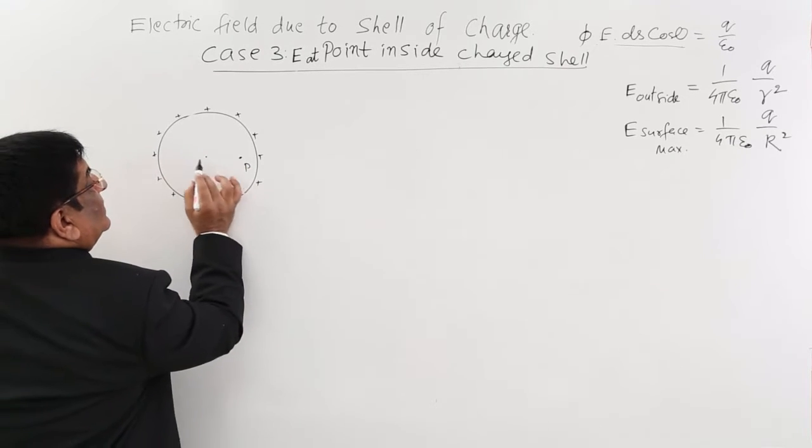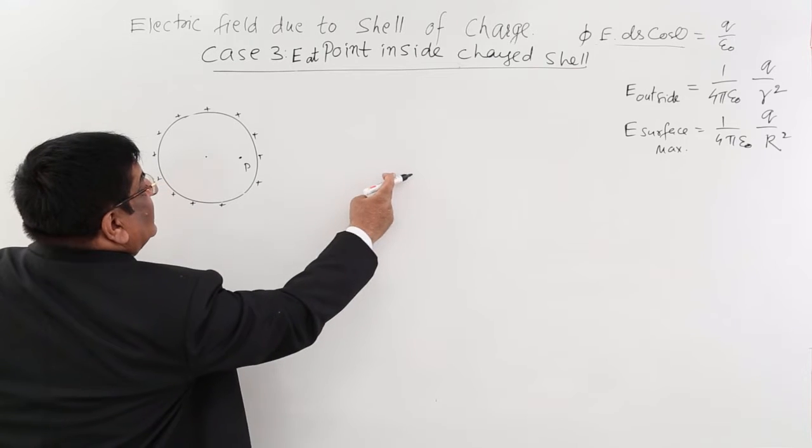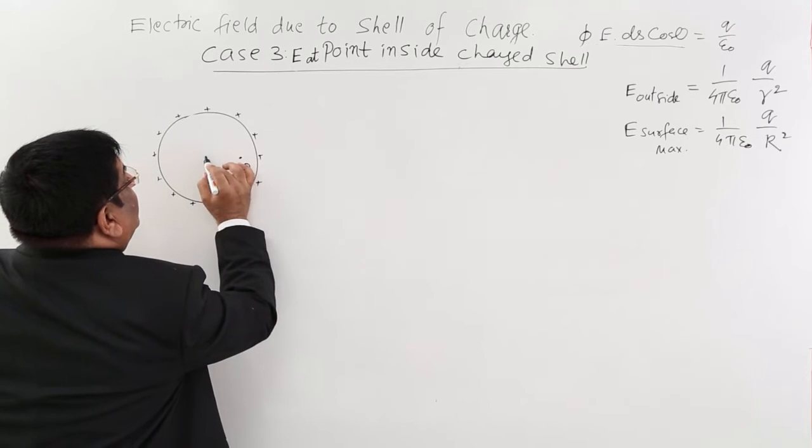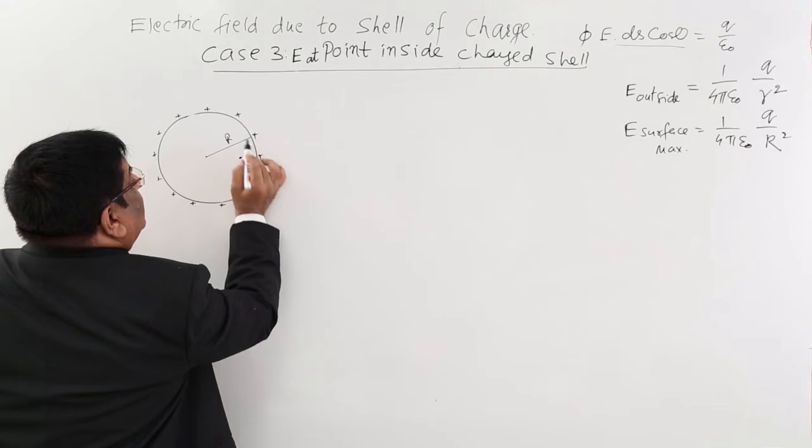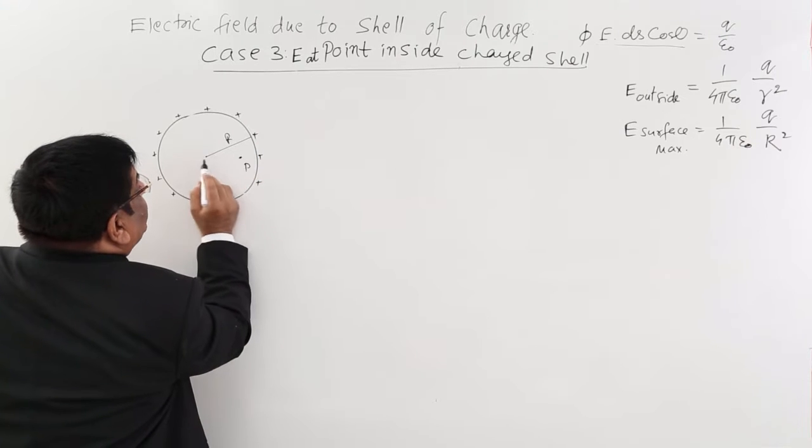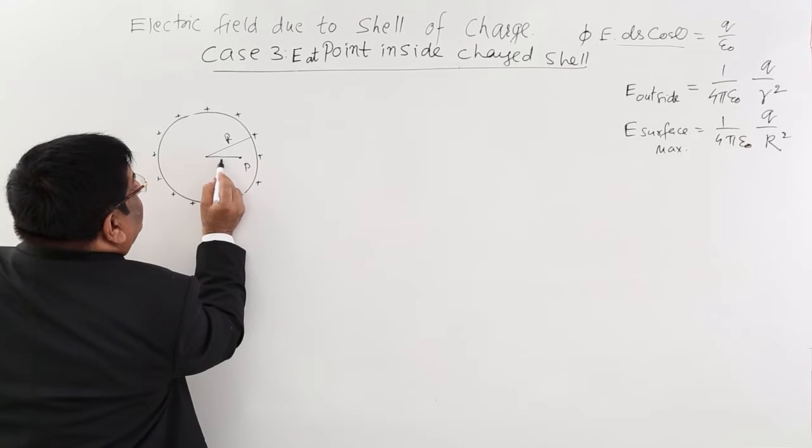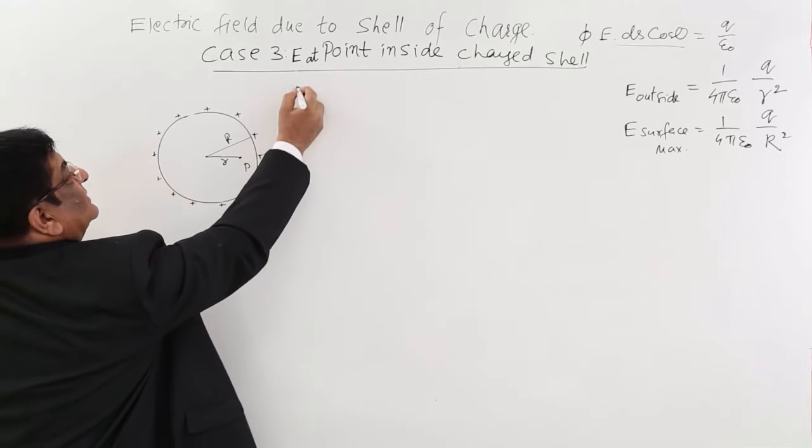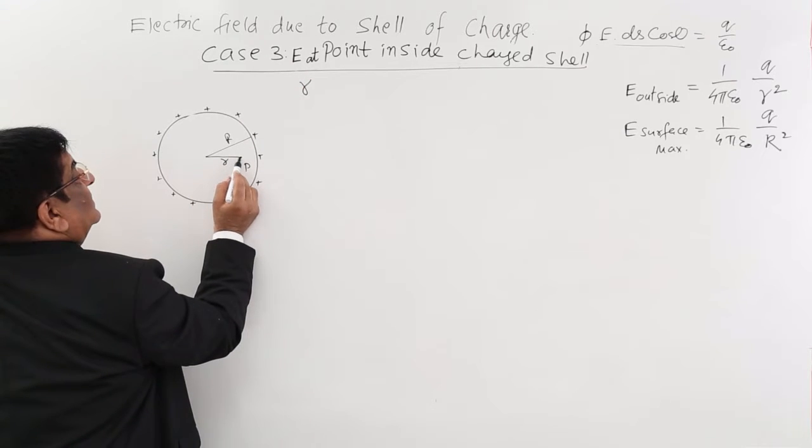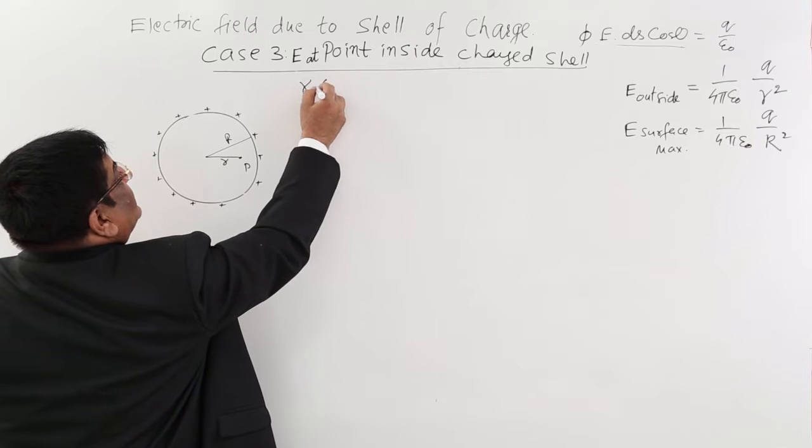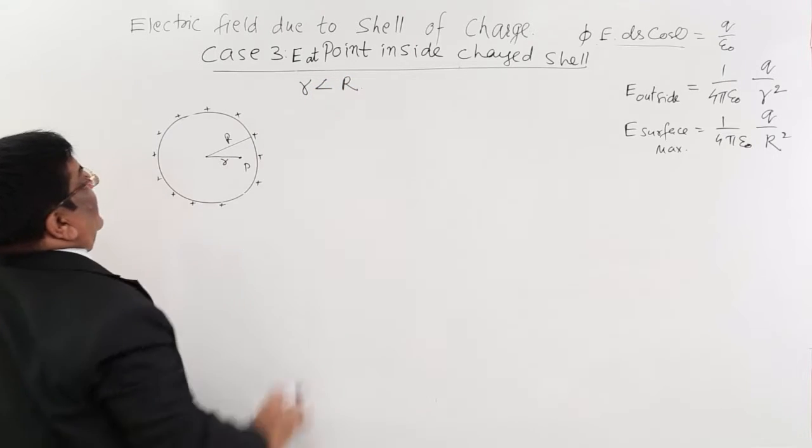Now the distance r which has reduced had become equal to R and it is now further reduced. Here in this case, the point is at a distance r and this r is smaller than R.